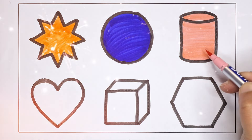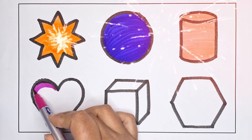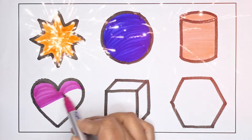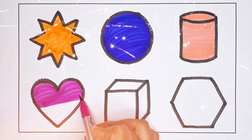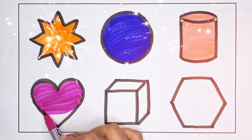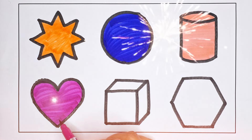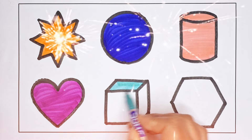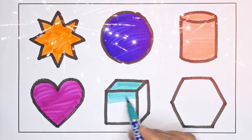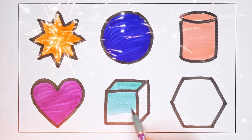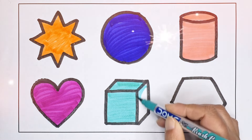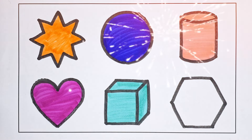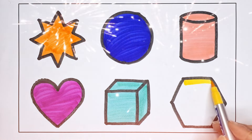Slender, pink color. Heart, light green color. Cube, yellow color.